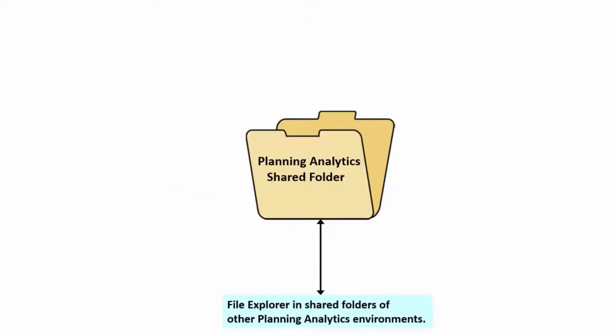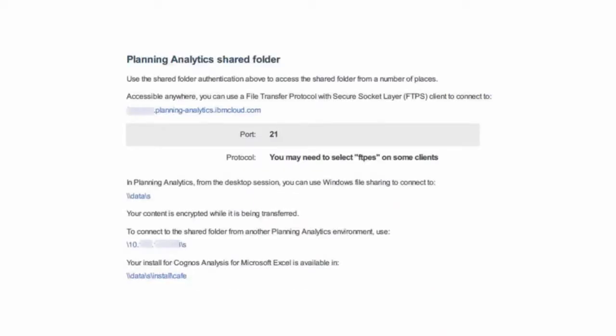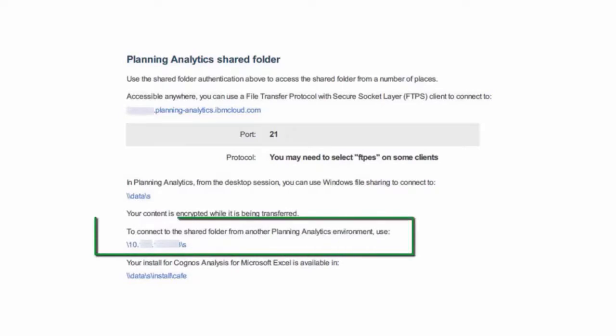The third method of accessing the shared folder is by using File Explorer to move files between the shared folders of separate Planning Analytics environments. All you have to do is look up the IP address listed in your Welcome Kit and then enter it in the Explorer address bar of your shared folder.